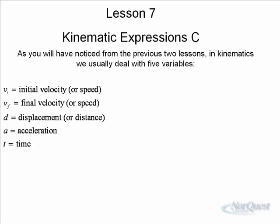Here are the five variables, as you will have noticed from previous lessons. The five variables that we deal with in kinematics, which is the study of motion, are initial velocity, final velocity, displacement, acceleration, and time.